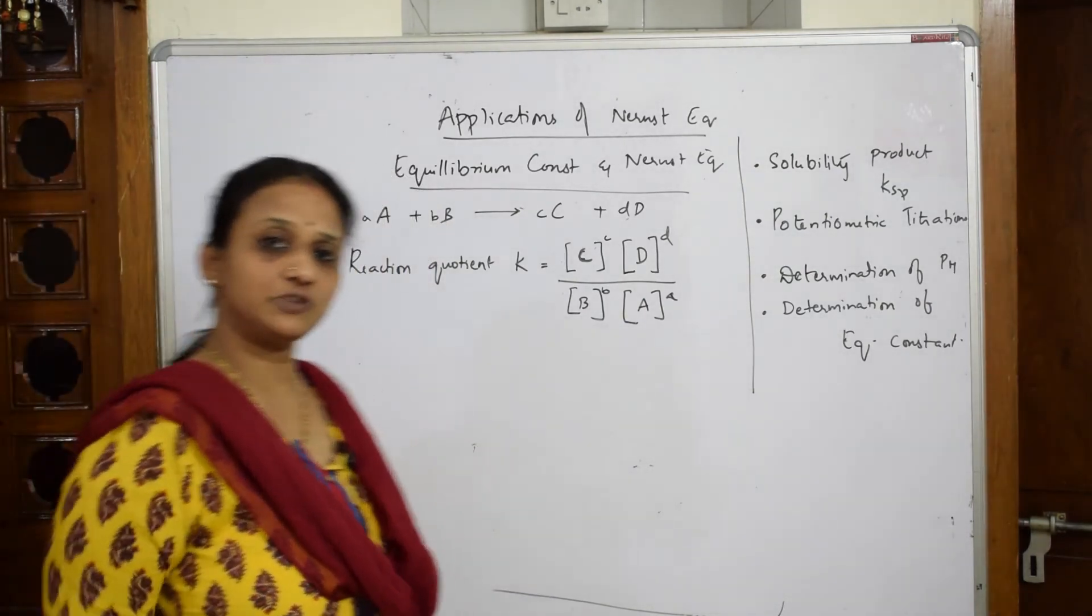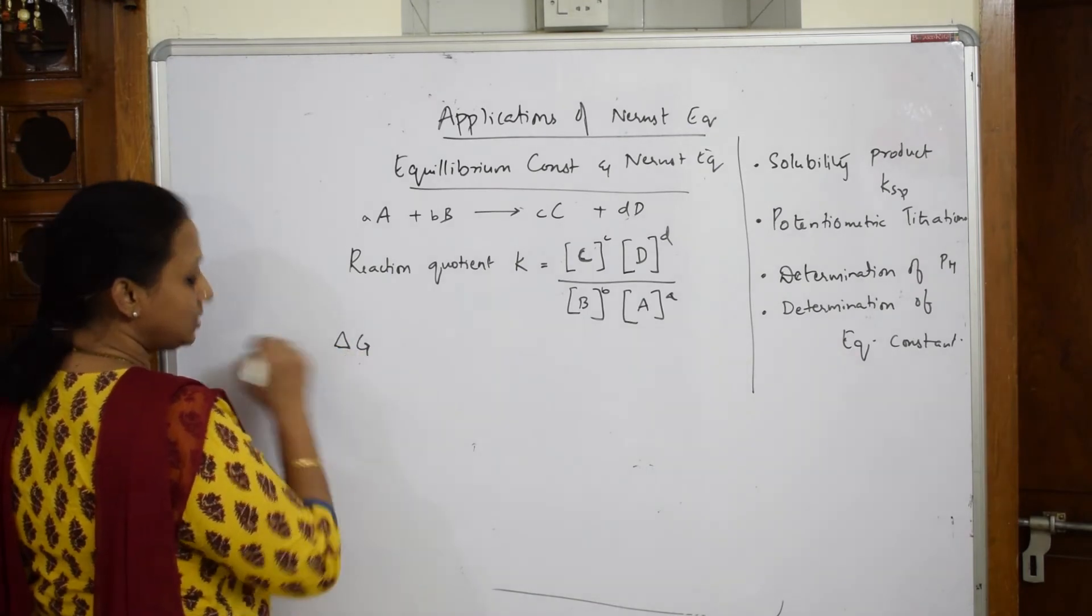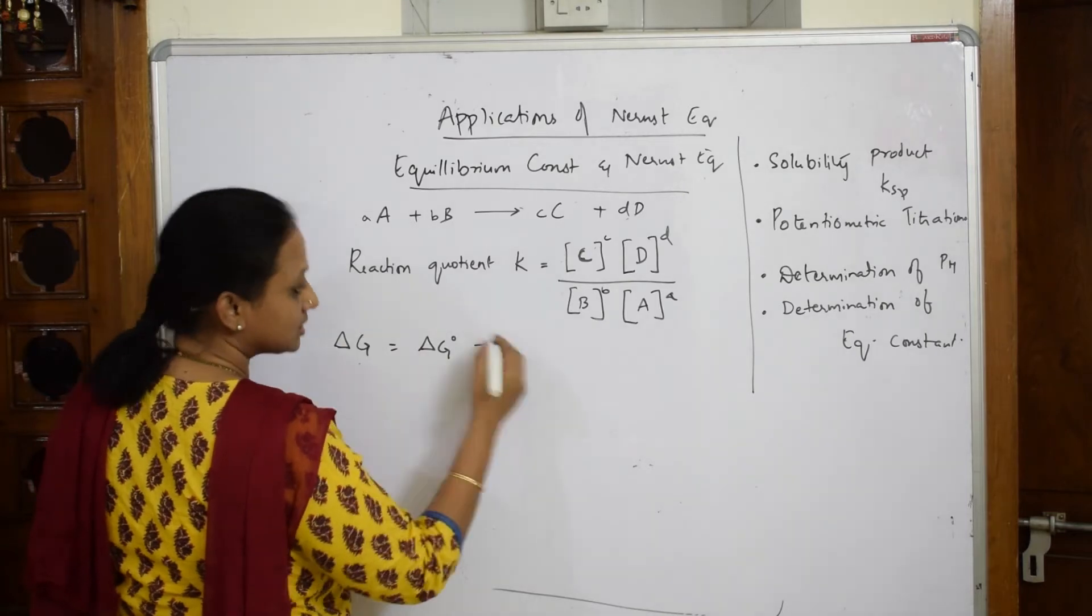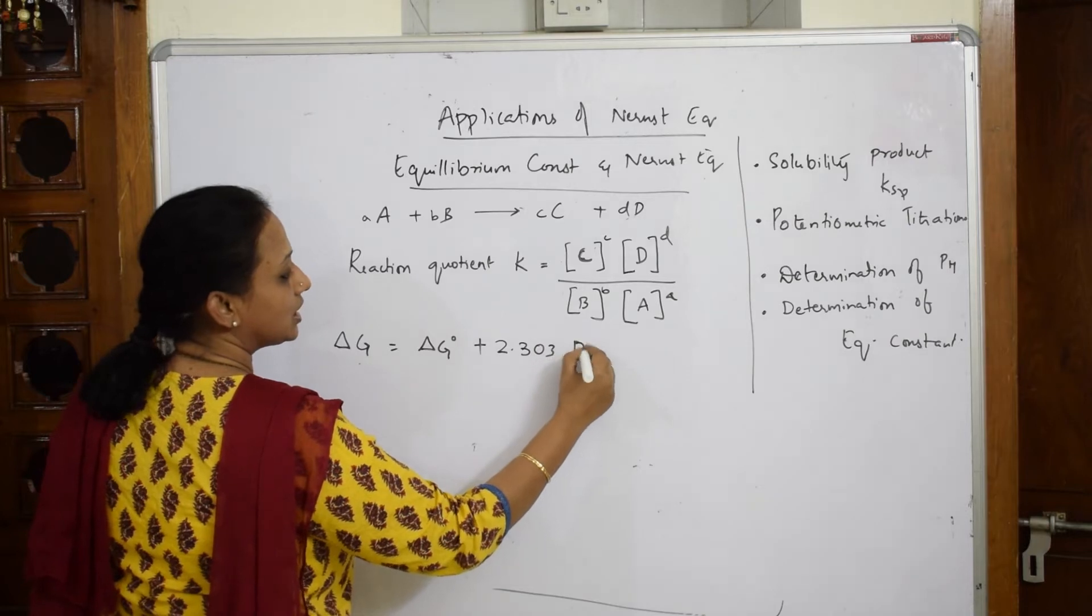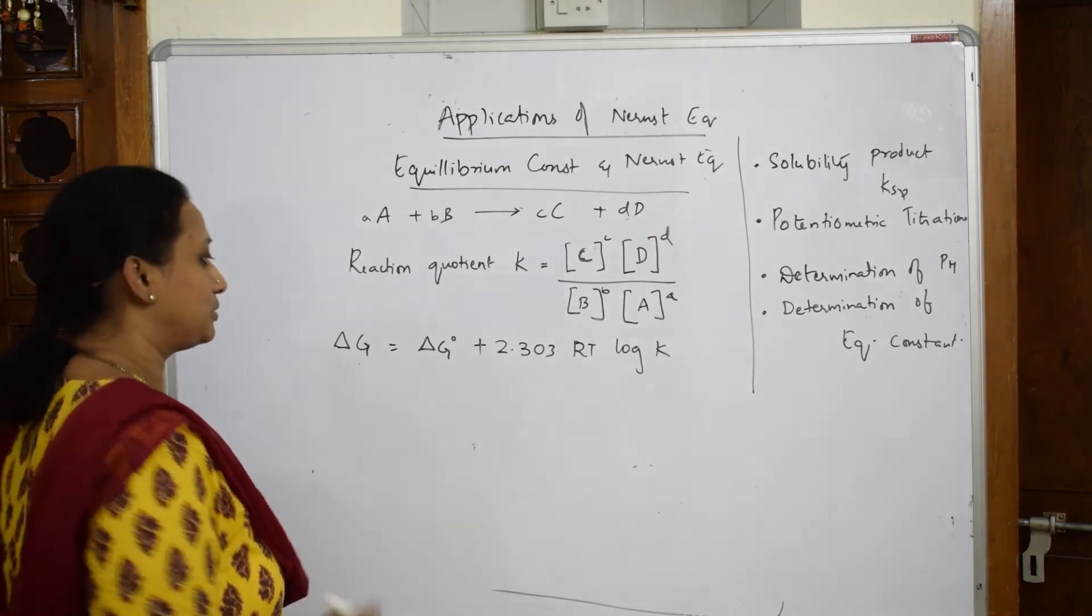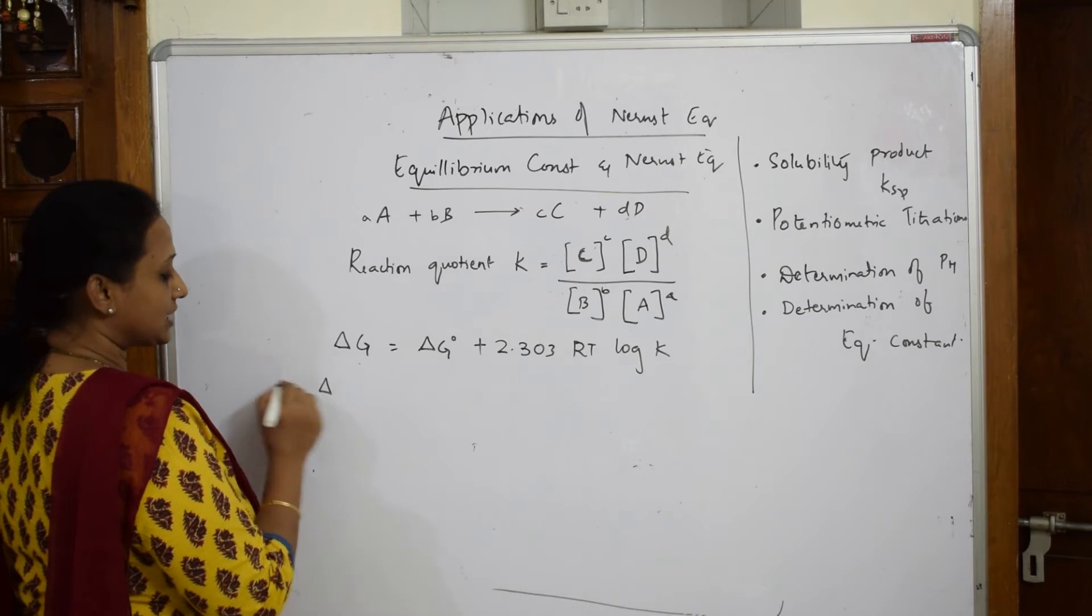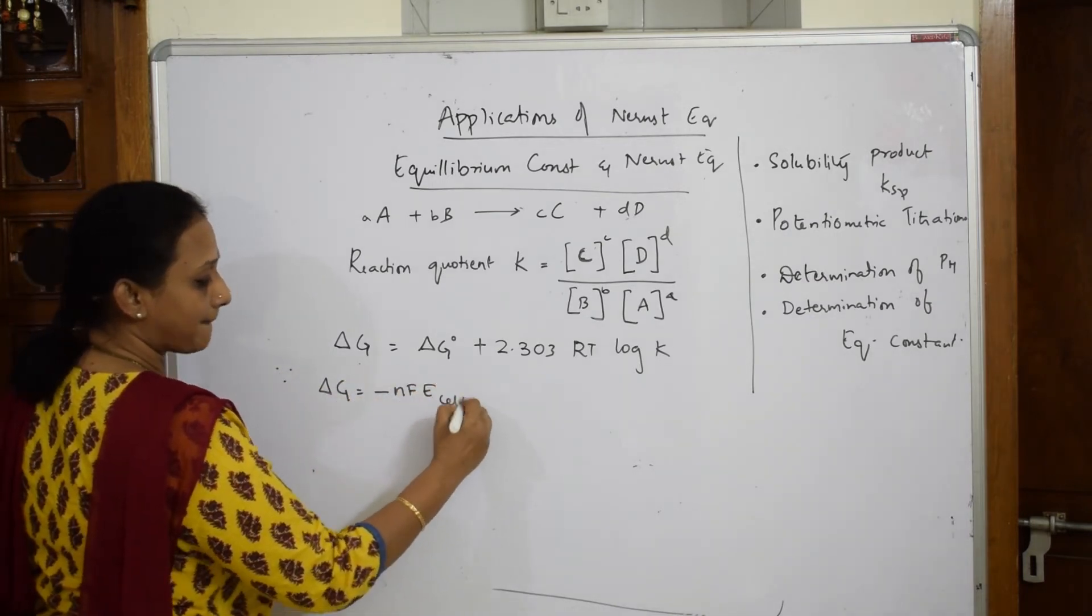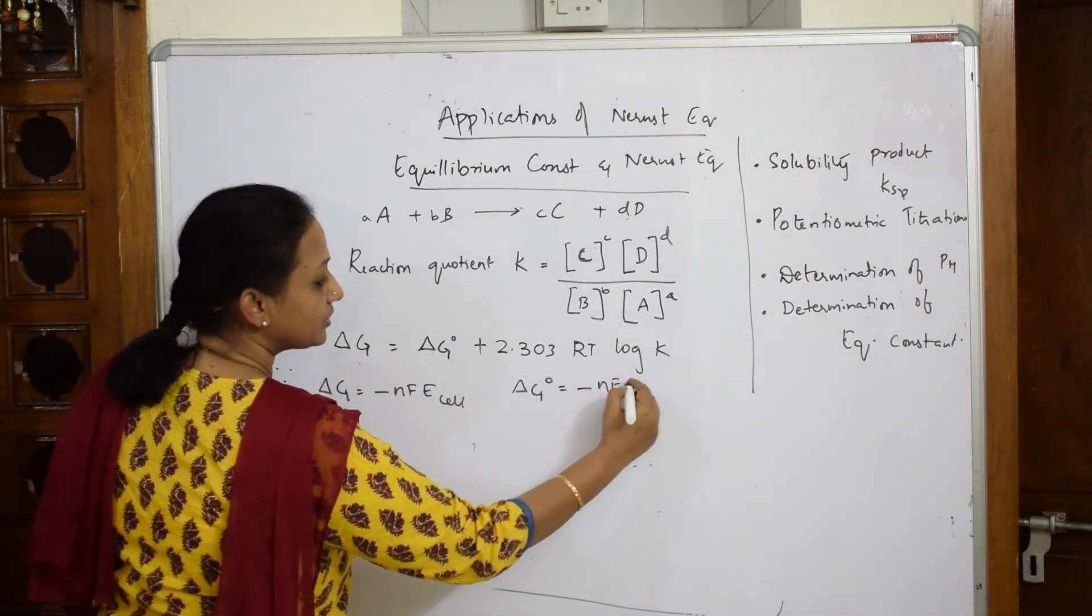Now we have two equations. Now I am going to relate it to Gibbs free energy. We already studied in grade 11 this formula: delta G is equal to delta G naught plus 2.303 RT log K. Delta G naught value is minus NF E naught cell. Delta G is equal to minus NF E cell.